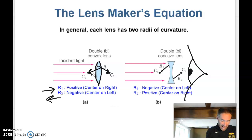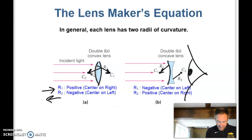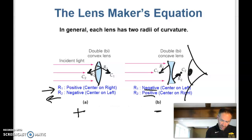Now, the opposite could be said about the diverging lens over here on the right. The light's going to hit it — the first surface has a center that's on the left, so that's a negative surface, negative curve. Then the second surface is going to have a positive curve. Why does that make this a positive lens and the diverging lens a negative lens? Well...